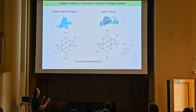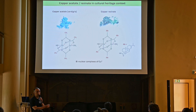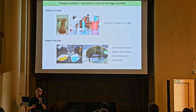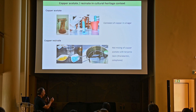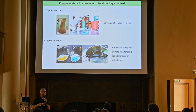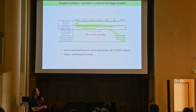The pigments at stake are copper acetate, also known as verdigris, and copper resinate. They are both binuclear complexes of copper, and copper is in the two-plus state. The two copper ions are bridged by carboxylate ligands — acetate ligands in the case of copper acetate, and abietate ligands in the case of copper resinate. Traditionally, copper acetate was prepared by corrosion of metallic copper in vinegar. To prepare copper resinate, copper acetate is mixed with a turpenic resin and heated, during which the acetate ligands are replaced by abietate groups.